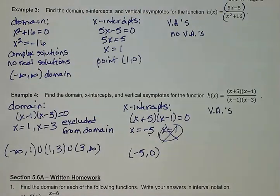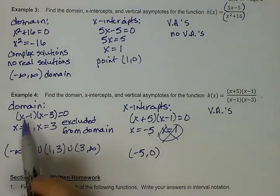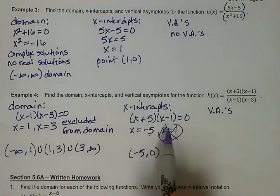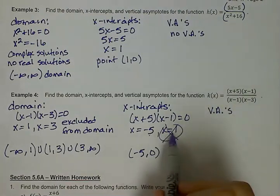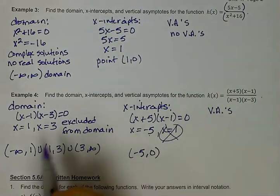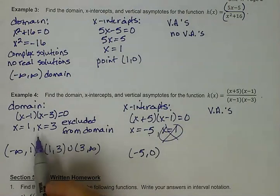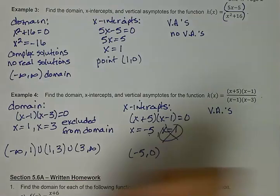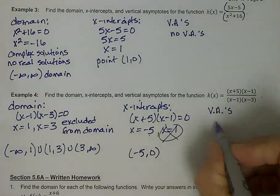When we look at our vertical asymptotes for this, the fact that x equals 1 showed up both when we found our domain, and when we were looking for our x-intercepts, means that the x equals 1 didn't count as an x-intercept. It's also not going to give us a vertical asymptote. So our only vertical asymptote is going to be at x equals 3.